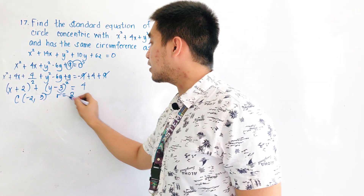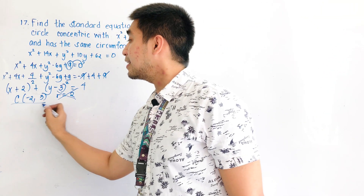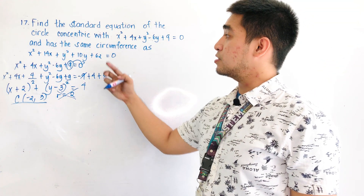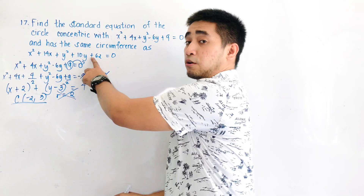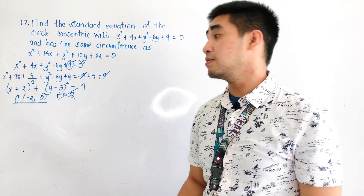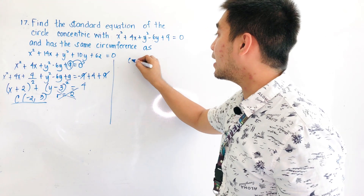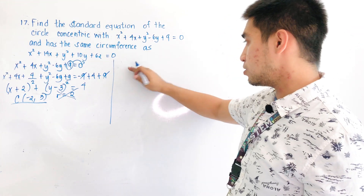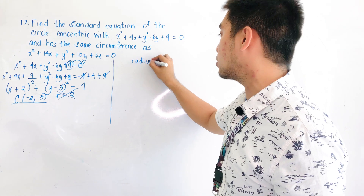But we will not consider this radius — we will only use the center, because the problem states the circle is concentric with this equation. We will be getting the radius from the second condition.